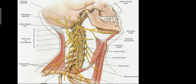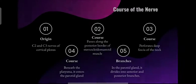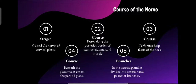Here is an image of the cervical plexus. Coming to the course of the nerve: the nerve originates from the C2 and C3 nerves of the cervical plexus. It passes along the posterior border of the sternocleidomastoid muscle. It perforates the deep fascia of the neck, and beneath the platysma it enters into the parotid gland, where it divides into anterior and posterior branches.